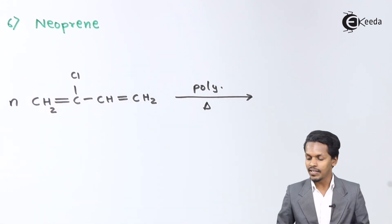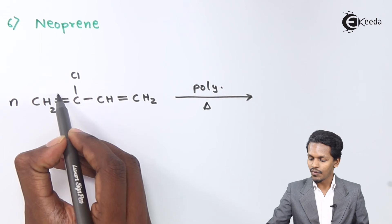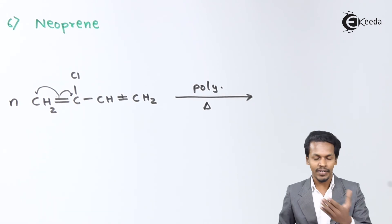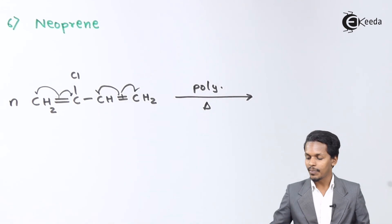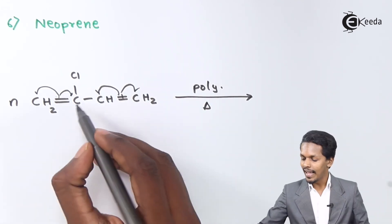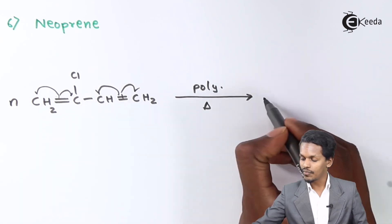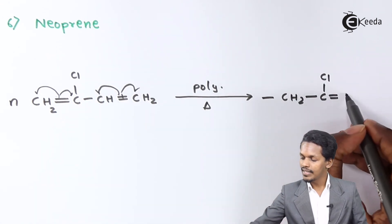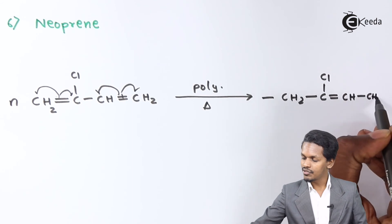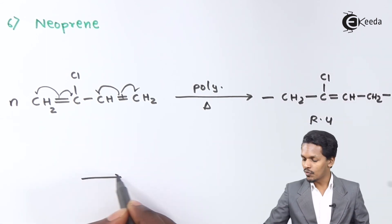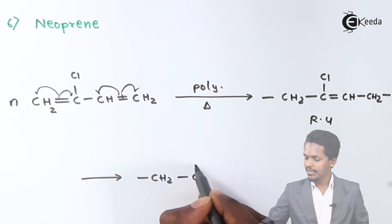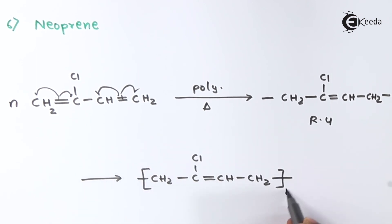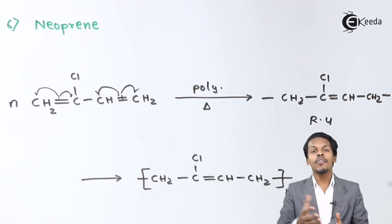The repeating unit is formed through the free radical mechanism as discussed earlier — one electron goes to one end, another to the other end, and a double bond forms in the chain. The repeating unit is –CH2–C(Cl)=CH–CH2–, and the main product obtained is neoprene.